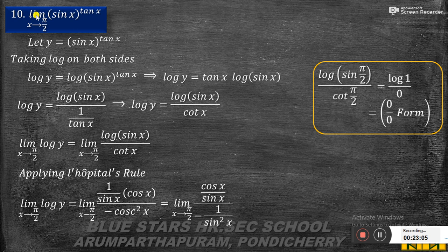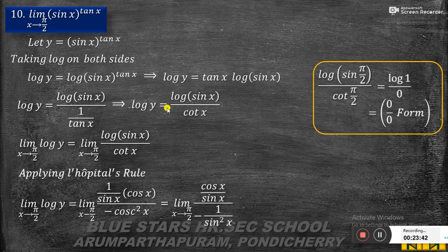The tenth problem: limit x tends to π/2 of (sin x)^(tan x). Let y = (sin x)^(tan x). Taking log on both sides: log y = tan x · log(sin x), which we rewrite as log(sin x) by cot x. Substituting x = π/2: sin(π/2) = 1, so log 1 = 0; cot(π/2) = 0. We get 0 by 0 — indeterminate form.